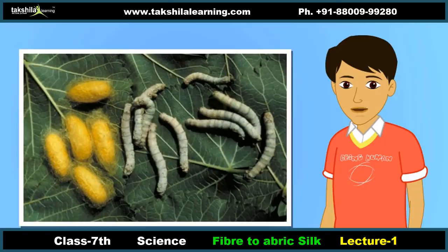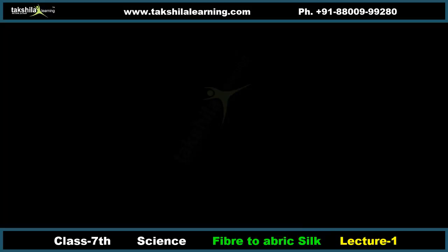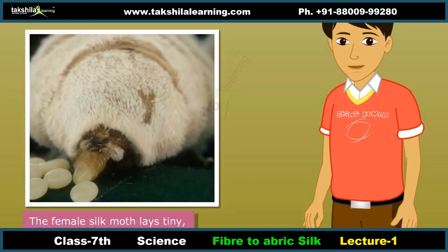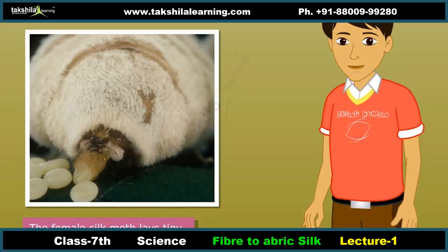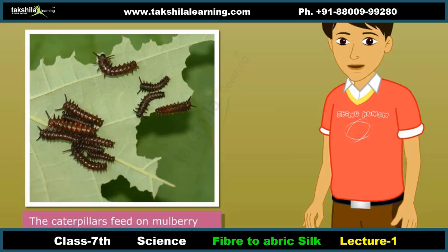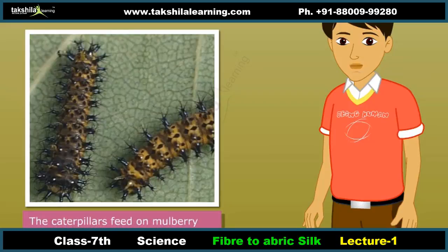The silk obtained from the cocoon of this moth is soft, lustrous, and elastic, and can be dyed in beautiful colors. The life cycle of a silk worm begins with the laying of a microscopic egg and ends with the emergence of a beautiful moth. The female silk moth lays tiny microscopic eggs at the end of summer. They remain dormant till spring. Come spring, tiny black caterpillars or larvae emerge from these eggs. These caterpillars feed on mulberry leaves and grow bigger and bigger.